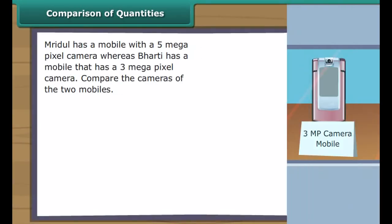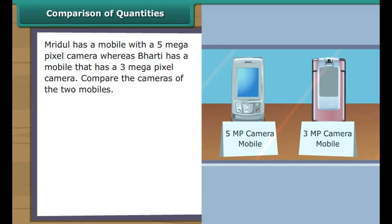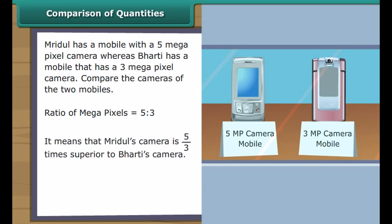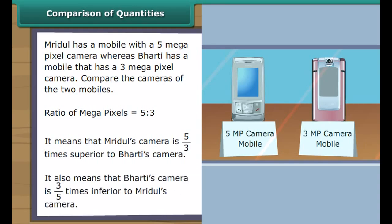Mridul has a mobile with a 5 megapixel camera, whereas Bharati has a mobile with a 3 megapixel camera. Let us compare the cameras of the two mobiles with the help of ratio. We express the ratio of the megapixels as 5 is to 3. It means that Mridul's camera is 5/3 times superior to Bharati's camera. It also means that Bharati's camera is 3/5 times inferior to Mridul's camera.